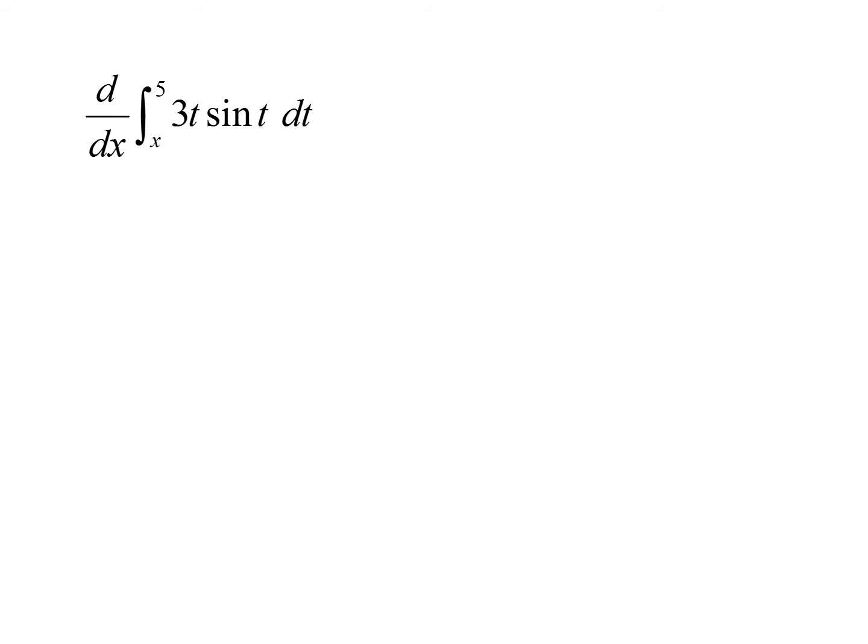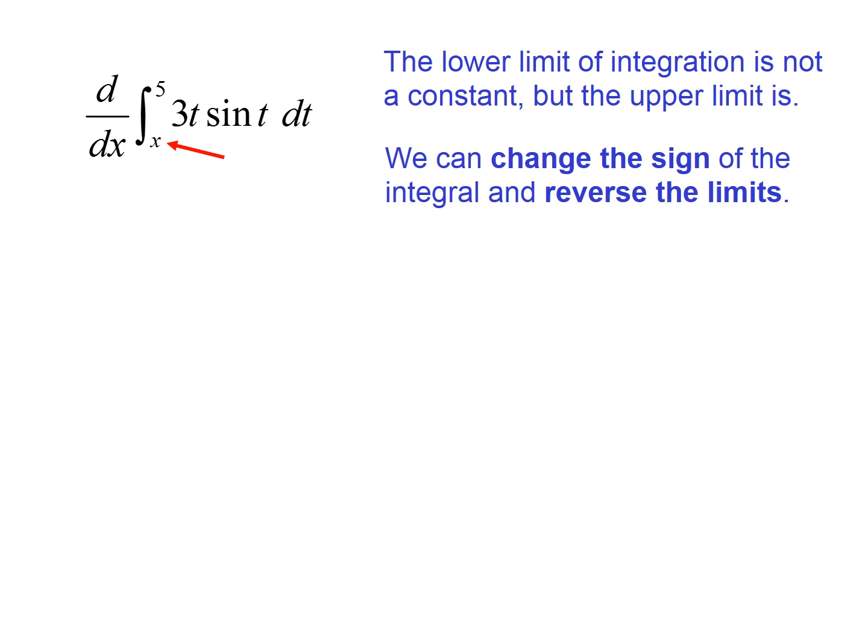We're going to do the same thing. We notice something different here. My upper limit is a constant, and the lower limit is the variable. So I'm going to have to fix this. I'm going to use the property that tells me that I can switch my limits and just make it negative. So now it fits the description. I'm taking the derivative of an integral with respect to x, which is my upper limit of integration. So I'm going to replace t with x. And the negative is because I reversed the limits.